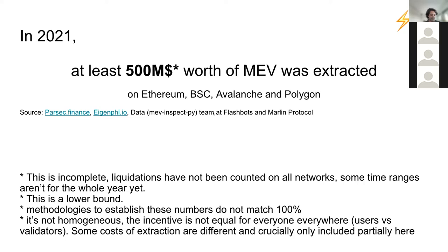In 2021, at least $500 million worth of MEV was extracted on Ethereum, BSC, Avalanche, and Polygon. There is a dashboard called MEV Explorer that shows a bigger number, but there were many misclassifications when it was released. The data team working on MEV Inspect Py has been working hard at correcting those, so this is a much more accurate figure. This $500 million number is incomplete — it is very much a lower bound. Liquidations are not counted on all networks, and some time ranges for Avalanche and BSC only cover part of the year.